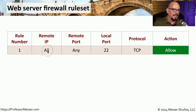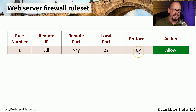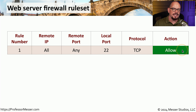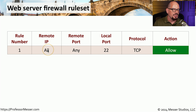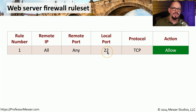Rule number one allows any IP address from any port number to connect to port number 22 on this particular device over protocol TCP. The allow action is the disposition at the end of this particular rule. Port 22 is commonly associated with SSH, so this would allow anyone to connect to this device over that SSH port.